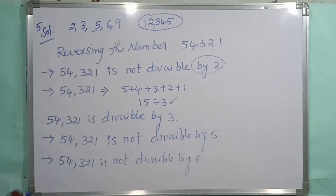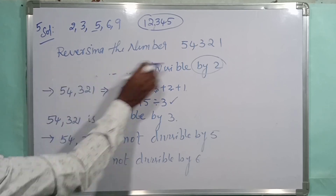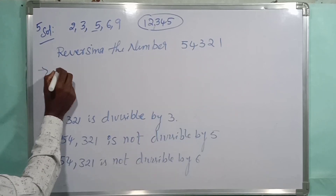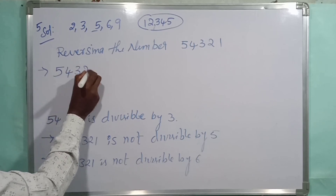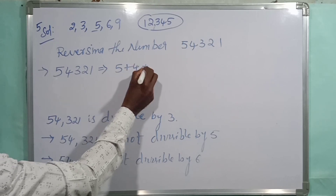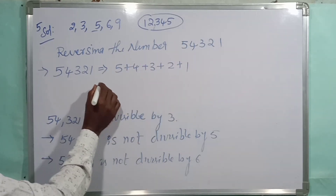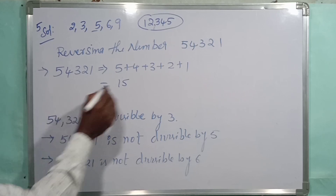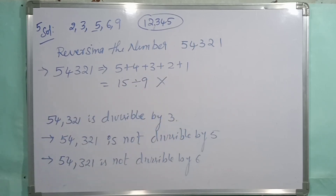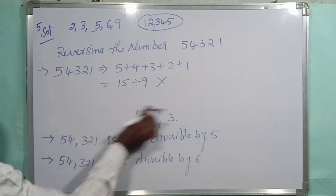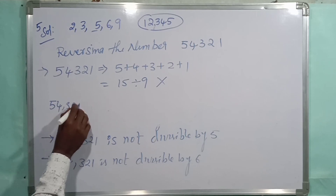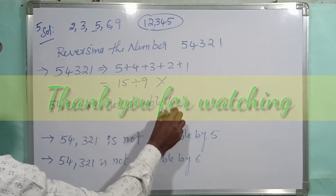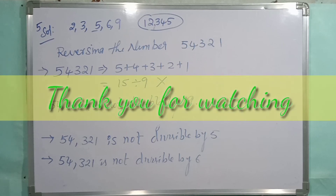Finally, for 9: the divisibility rule is that the sum of the digits should be divisible by 9. For 54321, the sum is 5+4+3+2+1 = 15. Is 15 divisible by 9? No. So 54321 is not divisible by 9. This is your fifth solution.